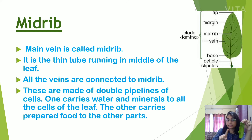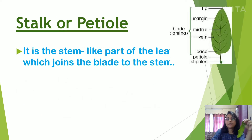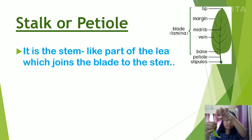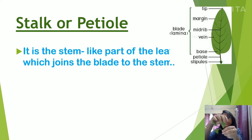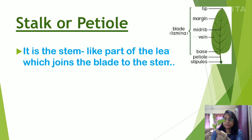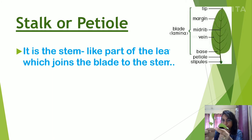Then we have the stalk or petiole. This portion is called the petiole. The main function of the petiole is that it joins the blade to the stem. Here I have a hibiscus plant — the petiole connects the leaf with the main stem. This portion that connects them is called the petiole.